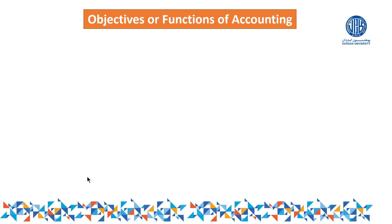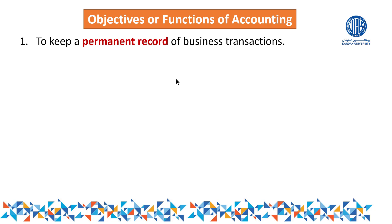Now let's move to the next point: after the definition of accounting, we discuss the objectives or functions of accounting — why we should do accounting. Objective number one: to keep a permanent record of business transactions. Accounting keeps the record of business transactions. Without accounting, you cannot keep a record, and without a record, you cannot provide a report, and without a report, there are no decisions.